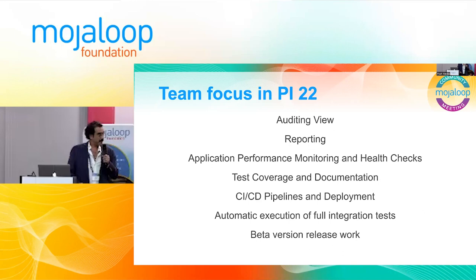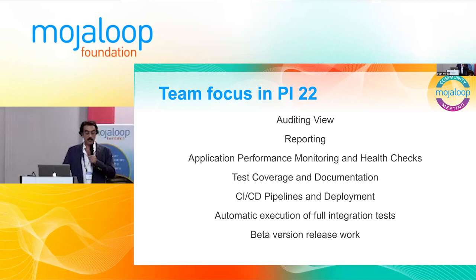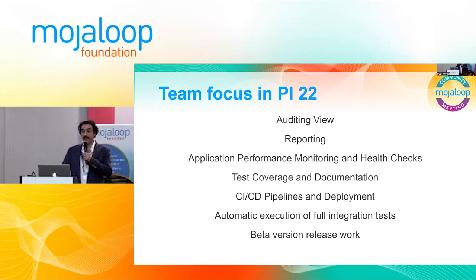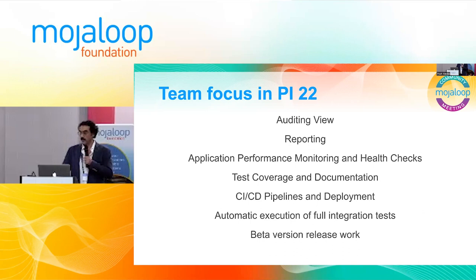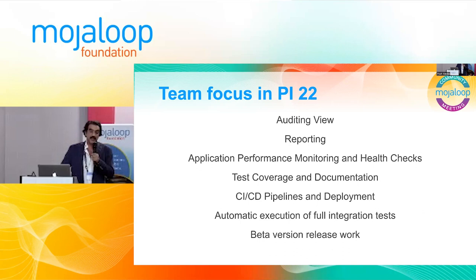Test coverage and documentation — we're lacking a bit on documentation, but we're putting effort into it. Test coverage is increasing rapidly, which is very good news. For CI/CD pipelines and deployment, we have fully automatic pipelines for lint, build, testing, and publishing of libraries and Docker images. What we want next is to automatically deploy to a live version to close the loop and have the complete CI/CD promise. Automatic execution of full integration tests is something we are picking up. The objective is to have a full environment where we can run integration tests completely — a very important step in guaranteeing quality. We're going from alpha to beta, so a lot of work is making sure we can deliver a beta quality version.